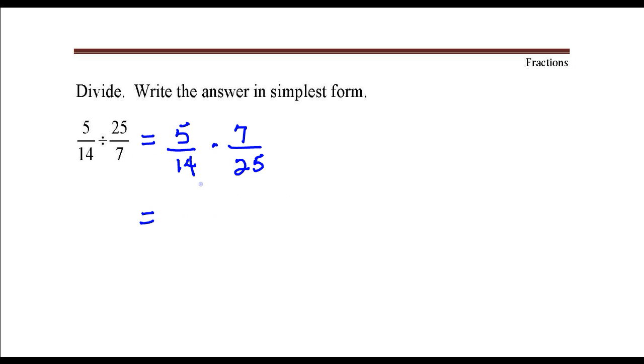Now, to multiply two fractions together, we're going to multiply numerator times numerator all over denominator times denominator. So, in the numerator, we have 5 times 7. In the denominator, we have 14 times 25.